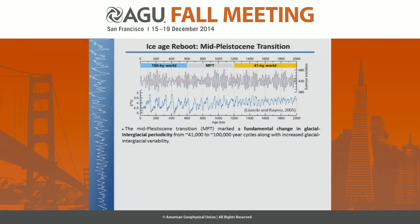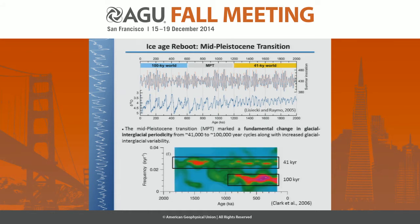The mid-Pleistocene transition is mostly marked by a fundamental change in the glacial-interglacial periodicity, which shifts from 41,000 years to 100,000-year cycles. It's also accompanied by increased glacial-interglacial variability. This is clearly seen in a wavelet spectral analysis on a benthic isotope stack over the last 2 million years, where you can clearly identify the 41-kiloyear frequency before 1 million years, and then the 100-kiloyear periodicity shows up.